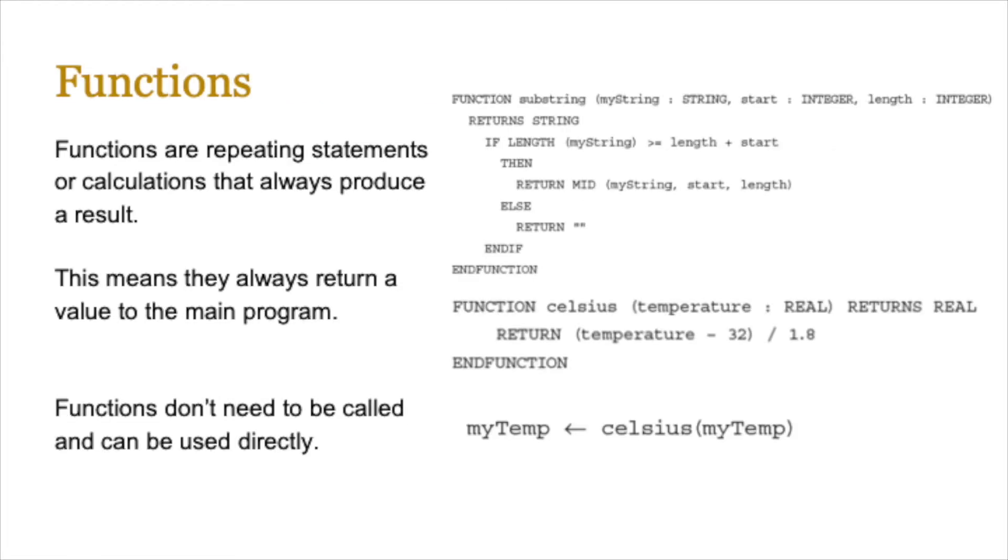Now functions, on the other hand, are repeating statements or calculations, just like procedures, but they always return a value to the main program. Functions themselves don't need to be called and they can be used directly. So the pseudocode you see on screen creates a function, which is a substring function, which uses a string and a couple of integers, and then returns a string value. And that's all defined in the header statement.